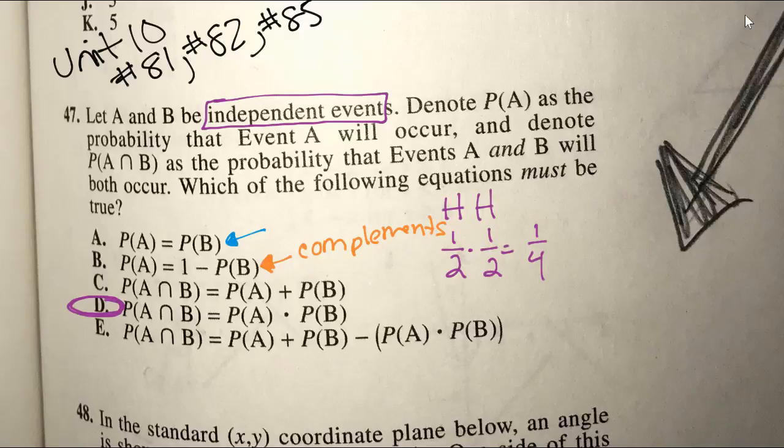C is just not an equation that you will use. They're trying to get you to add when really you need to multiply. That is how you find the probability of two independent events.